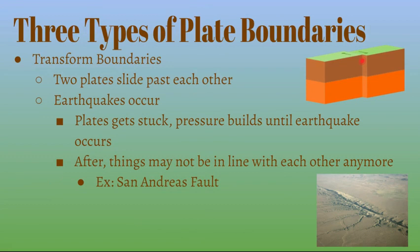Transform boundaries are when two plates slide past each other. Sometimes they can get caught and pressure builds until the pressure is released by an earthquake. After an earthquake, things might not be in line with each other anymore. An example would be the San Andreas Fault, located in California.